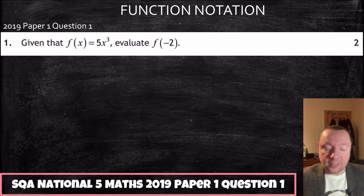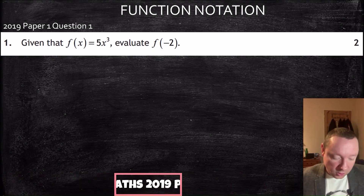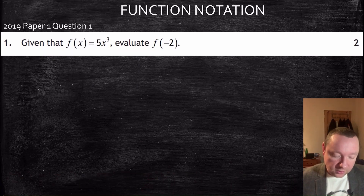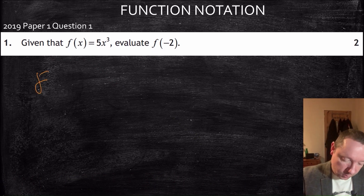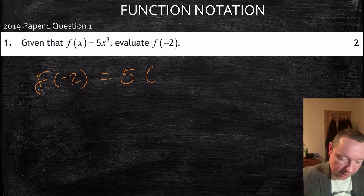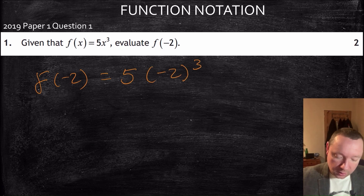National 5 Maths 2019, Paper 1, Question 1. f of x is 5x cubed. Find f of minus 2, so substituting minus 2 in, we've got 5 times minus 2 cubed.